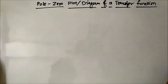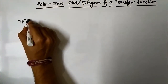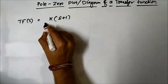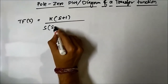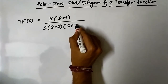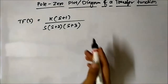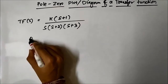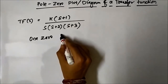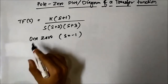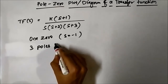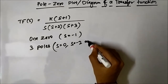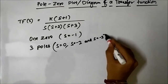Suppose we have another transfer function: k(s+1) / [s(s+2)(s+3)]. In this transfer function we have one zero at s equals minus 1, and three poles at s equals 0, s equals minus 2, and s equals minus 3.